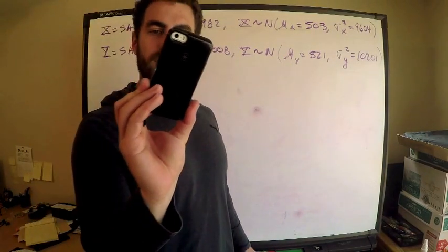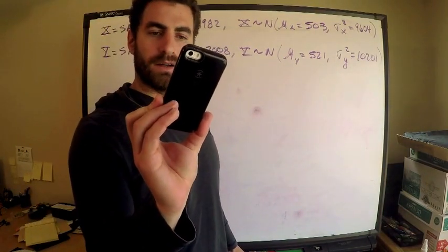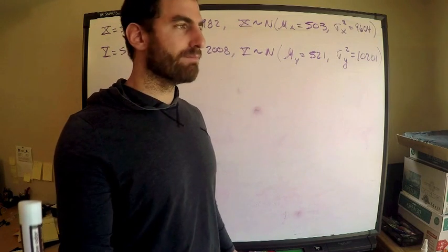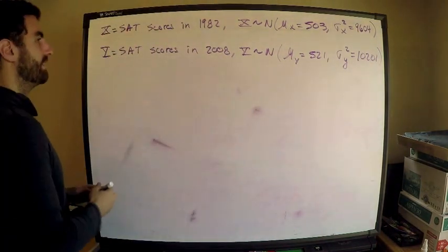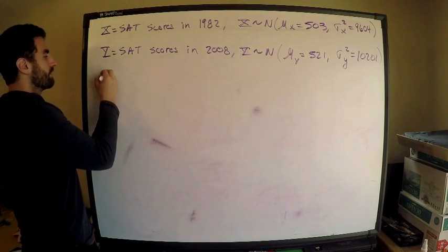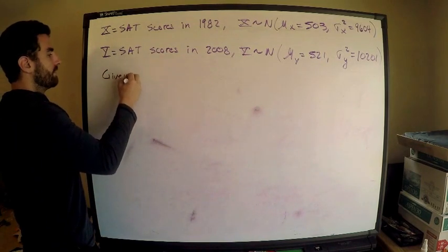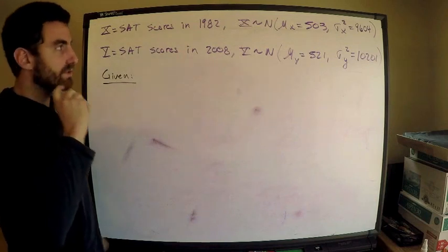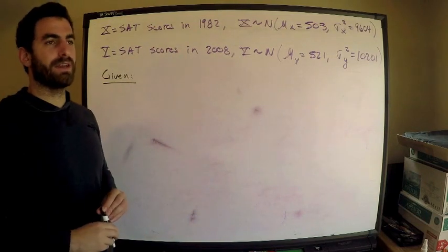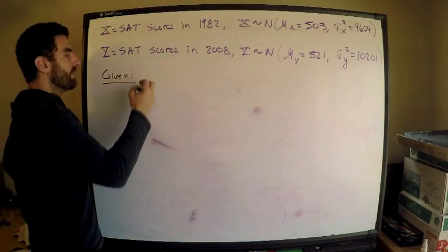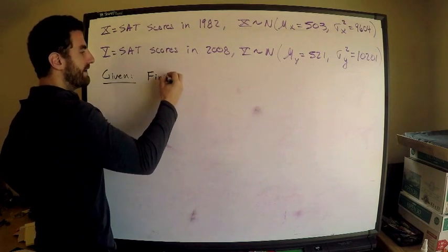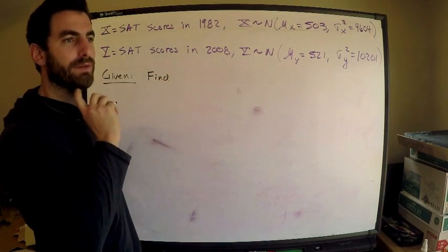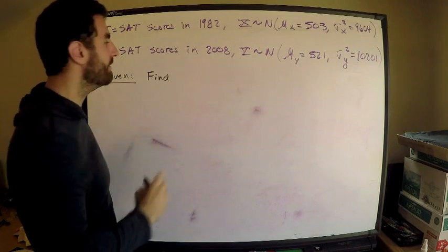Now what does the question say? We're first given that Abby's mother's score was in the 93rd percentile. So we're given that for Abby's mother, which was in 1982, her score is in the 93rd percentile. Therefore, we need to find, by definition, we need to find what her score was because then Abby got the same score in 2008.